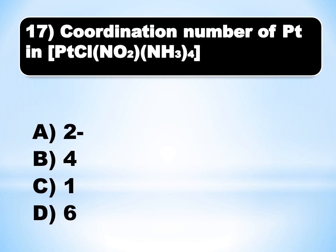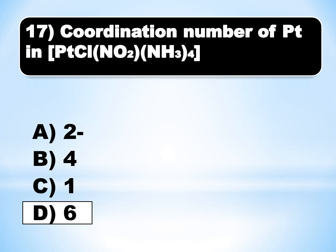Last MCQ, number 17: Coordination number of platinum in a complex compound. Looking at the ligands: 1 Cl, 1 NO₂ (nitro group), and 4 amine groups — these are all monodentate ligands. If you count them, the answer is D (delta): 6.